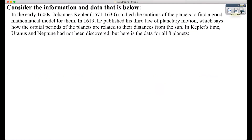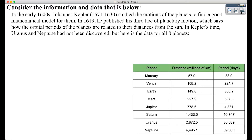Here is the information for today. In the early 1600s, Johannes Kepler studied the motion of the planets to find a good mathematical model for them. In 1619, he published his third law of planetary motion, which states how the orbital periods of the planets are related to their distances from the sun. Now, in Kepler's time, Uranus and Neptune had not been discovered, but here is the data for all eight planets. The first column lists the names of the planets, the second column shows the distance of each planet in millions of kilometers, and the third column shows the period in days.